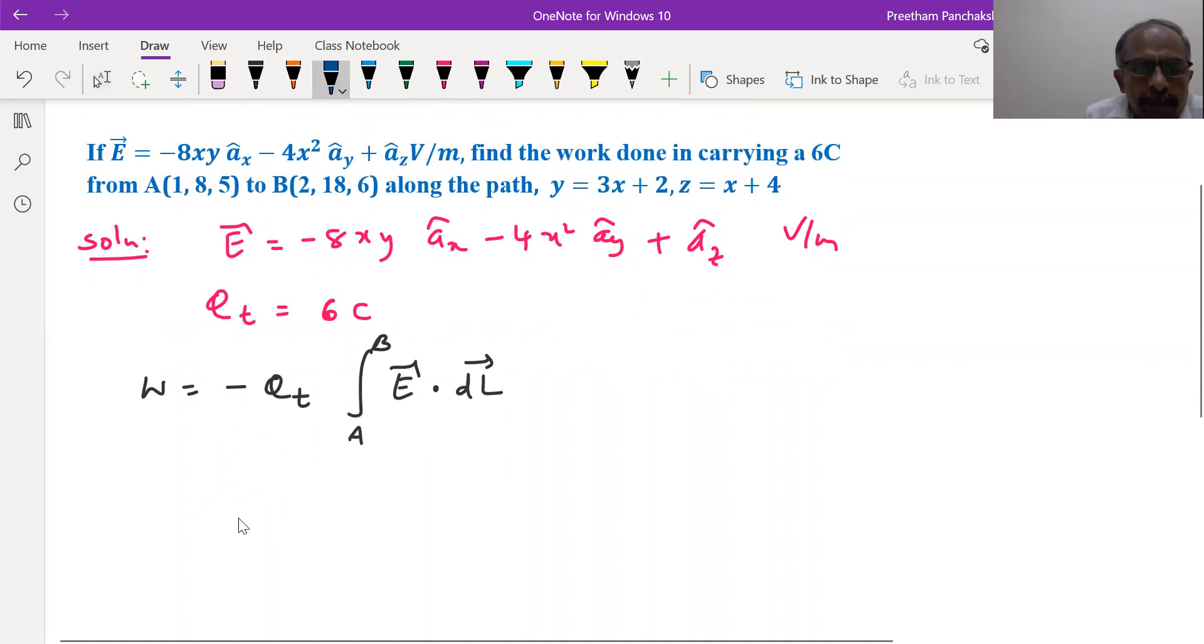So here let us substitute the values. Qt is six Coulomb, point A one eight five, point B two eighteen six.